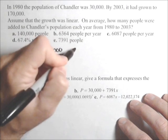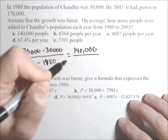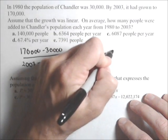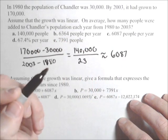So we are gonna get 140,000 over 23, which if you use your calculator to calculate, you're gonna get roughly 6,087 people per year.